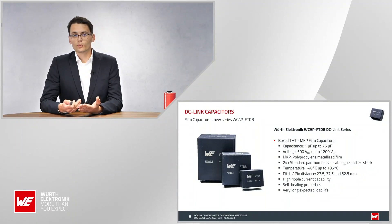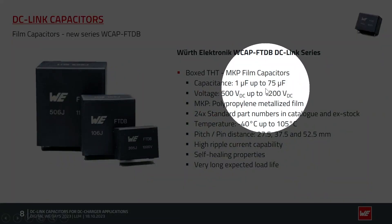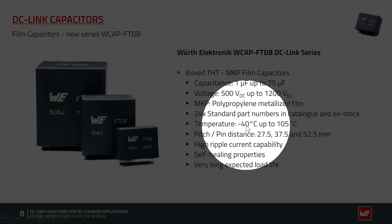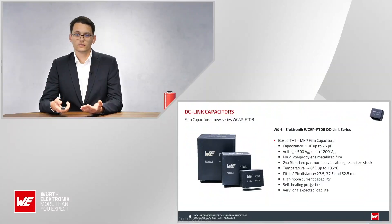I want to talk about our new DC-Link series, the WCAP-FTDB. We offer 1 µF up to 75 µF, with voltage ratings from 500 V up to 1200 V. We use polypropylene as the base material because it has very good properties — especially regarding dissipation factor. The temperature range is from -40°C up to 105°C. One big benefit is the ripple current capability, and we also have self-healing properties and very long expected load life.